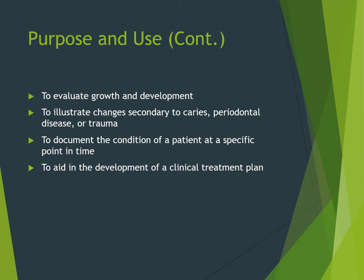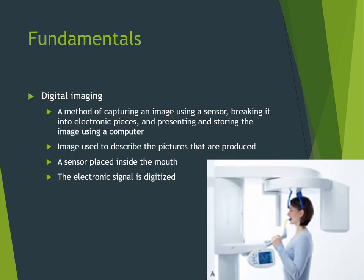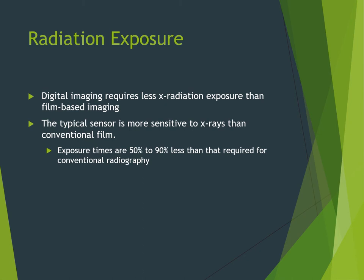The fundamentals of digital imaging involve capturing the image on a sensor, breaking it into electronic pieces, and sending those pieces to a computer which reorganizes them and shows you the image. The sensor is placed inside the mouth and the electronic signal is digitized. The sensor picks up the x-rays, transmits the image to the computer, which then digitizes and displays it.